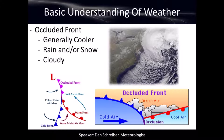An occluded front occurs when a cold front catches up to a warm front. A cold front moves faster because it has high pressure behind it, while the warm front has lower pressure behind it. When the cold front catches up to the warm front, it cuts off the fuel to the low-pressure system, creating an occluded front. The occluded front generally separates cold air from other cold air. This is where you're going to see your worst winter storms — blizzards, nor'easters, freezing rain events — right where the warm front and cold front all come together.